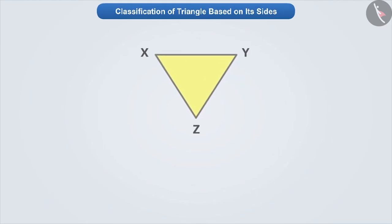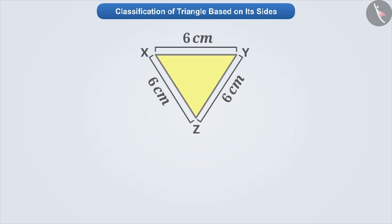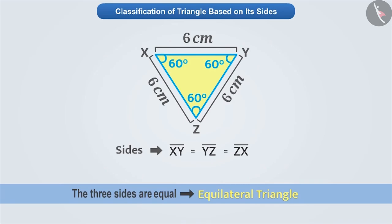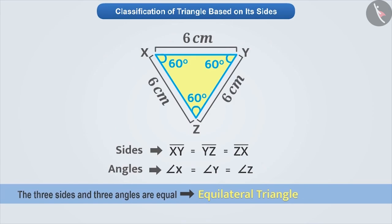Now, look at this triangle. On measuring this triangle, we find that all its three sides are equal. A triangle whose three sides are equal is known as an equilateral triangle. If we measure its angles, we find that all the angles of such a triangle are also equal. That is, all the sides and all the angles of an equilateral triangle are equal.